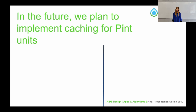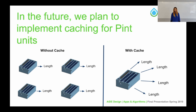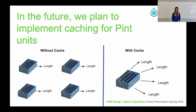Finally, we plan to implement caching for pint units. Caching is beneficial because it allows us to store values and access them more efficiently rather than having to recalculate every time they're needed. Currently, caching for our design only works with non-pint units — when we use caching for pint units there are errors — so we want to implement changes that will allow us to get the benefits of caching with pint units.